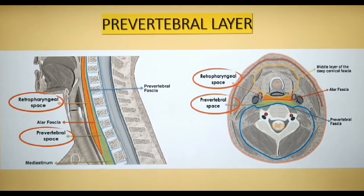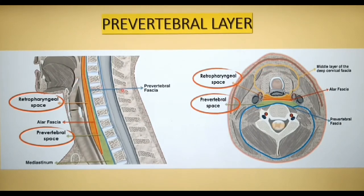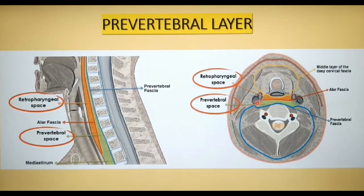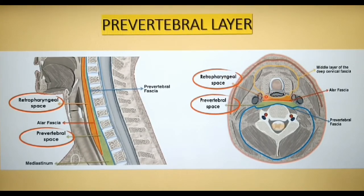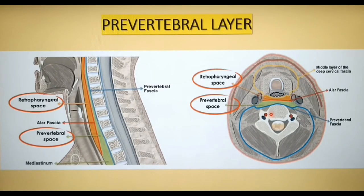Anteriorly, the prevertebral fascia is separated from the pharynx and buccopharyngeal fascia by the retropharyngeal space, which contains loose areolar tissues. In the cross-sectional view, the prevertebral fascia is illustrated in blue color and the orange color shows the retropharyngeal space. Anterior to the retropharyngeal space is the buccopharyngeal fascia. This space is of utmost importance in dealing with space infections, and its significance will be dealt with in detail in subsequent lectures.